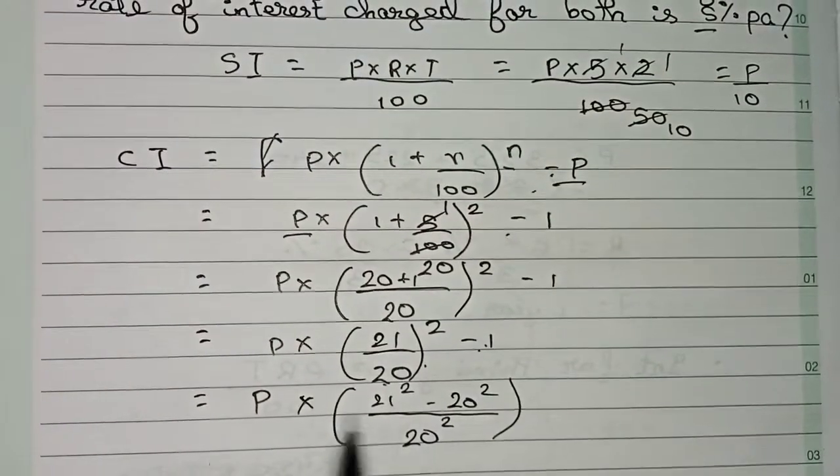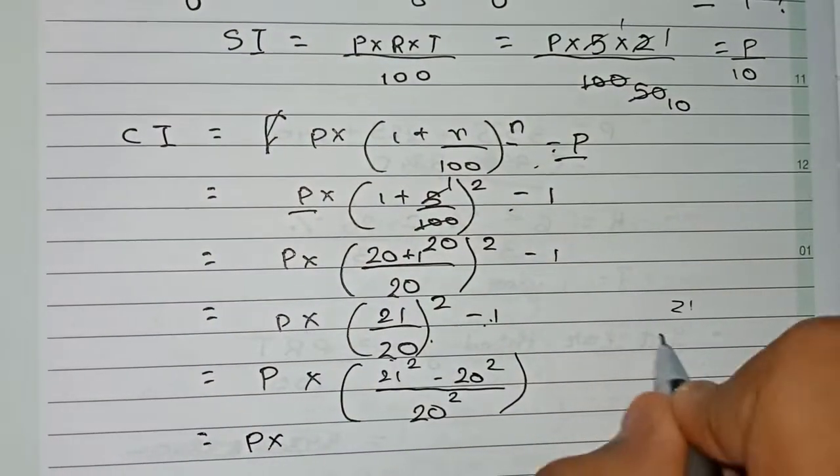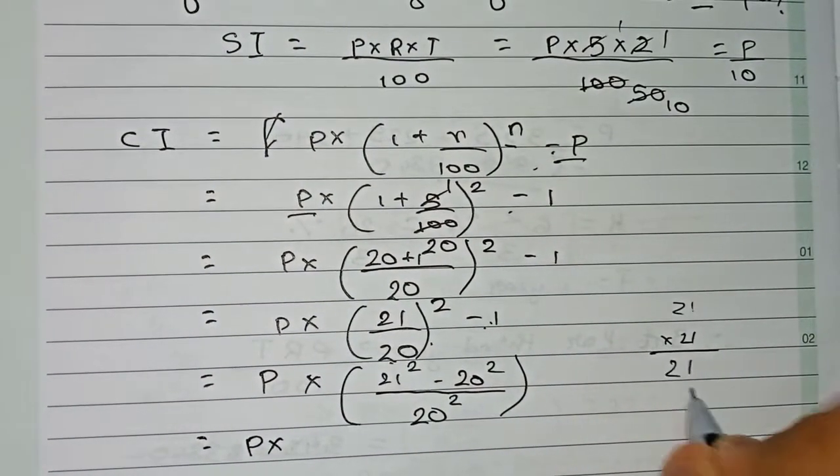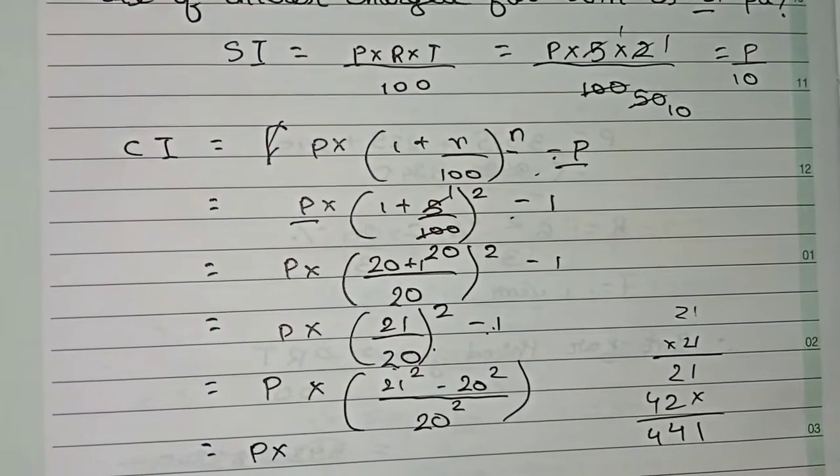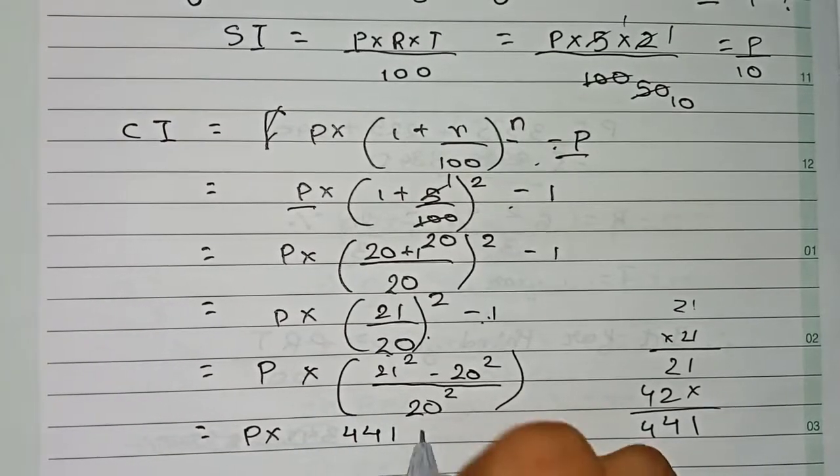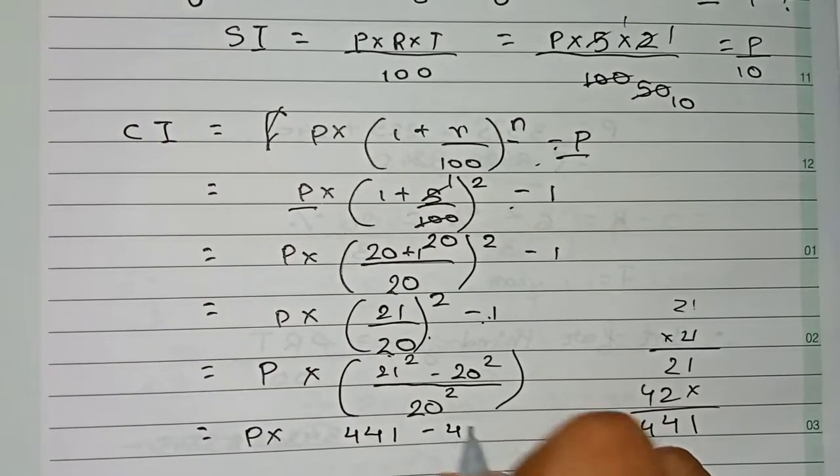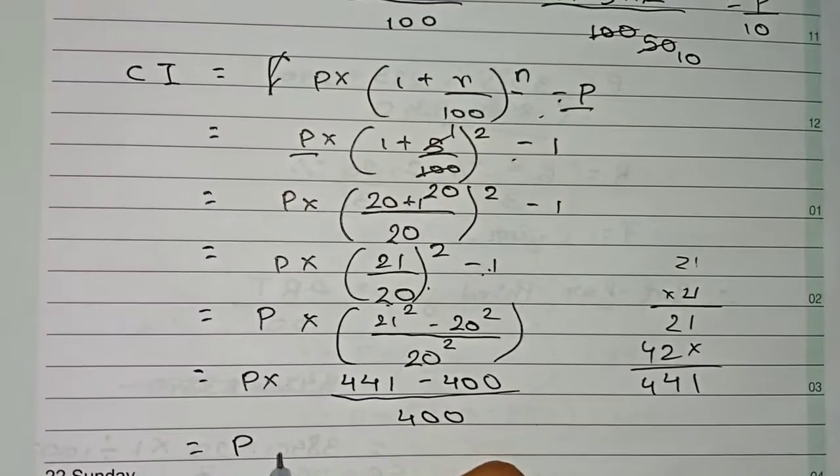So principal into 21 square, that is 21 into 21, 1, 2, so 2, it's 4, 441. So this is the value for 21 square minus 20 square, we all know that is 400, minus again the 400. So it becomes principal into 41 by 400. So this will be the value of our compound interest.